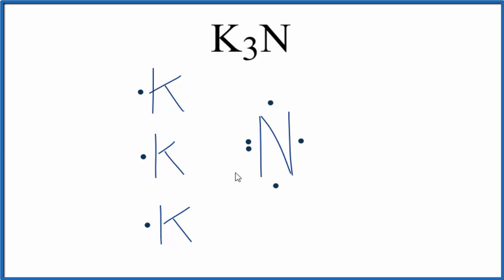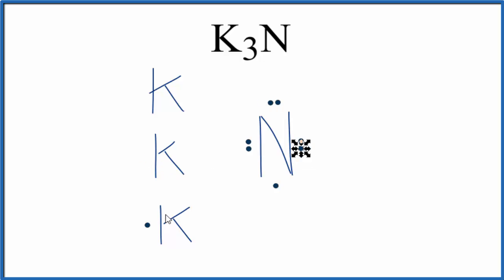So we said this is an ionic compound — the metals will transfer the valence electrons to the non-metal. So the potassium: this one will transfer an electron here, here, and this last one. We fill the octet for nitrogen, so that's very stable. Nitrogen's got three more electrons; it's received the electrons from these potassium atoms.